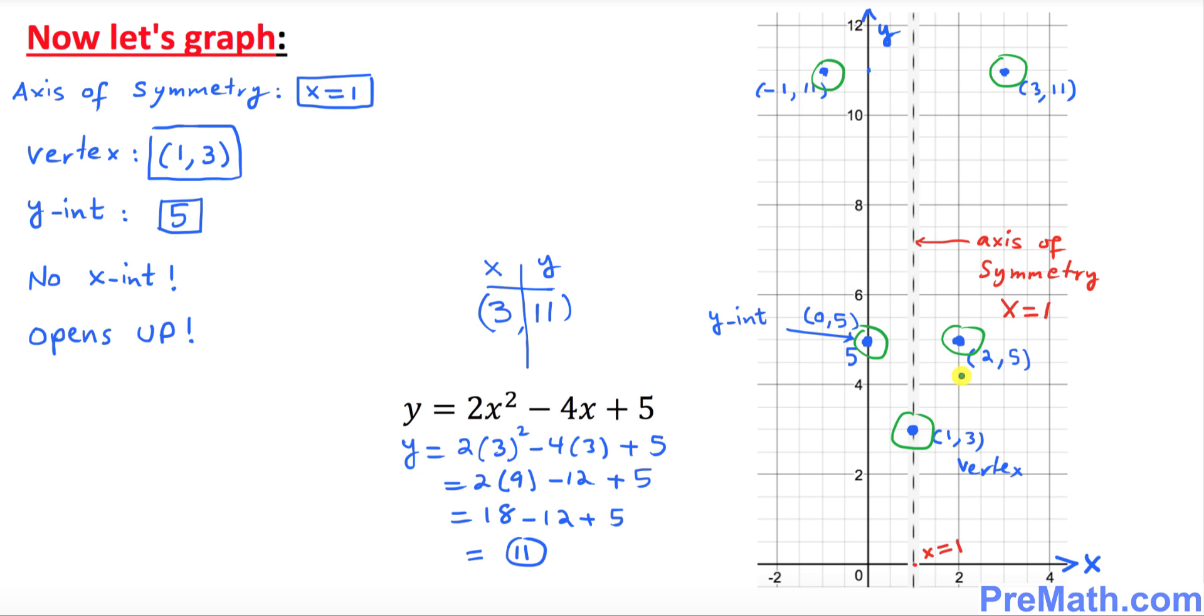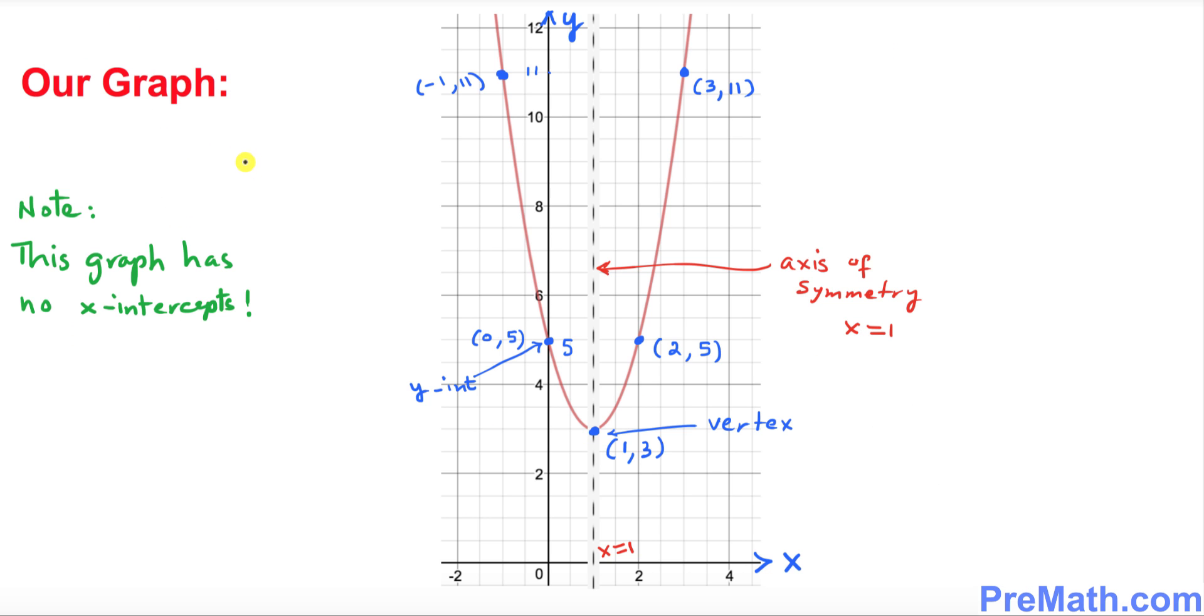Now we are going to go ahead and connect these points and we are going to get a really neat and precise graph. Thus this is our final product, and this graph has obviously no x-intercepts.